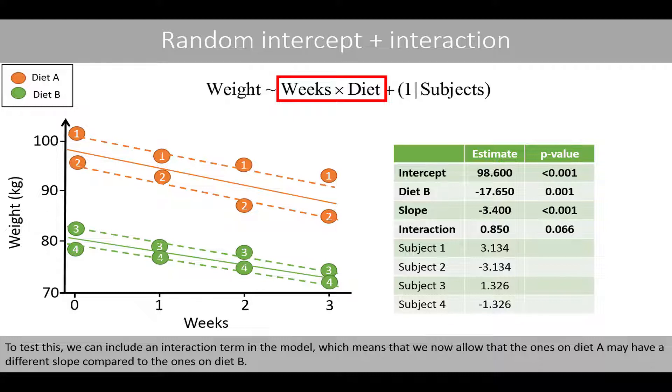To test this, we can include an interaction term in the model, which means that we now allow that the ones on diet A may have a different slope compared to the ones on diet B.